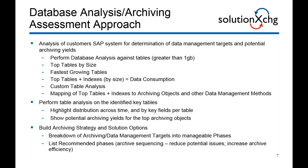We perform a table analysis on the identified key tables. Doing a table analysis highlights distribution across time — for example, for an FI document, we would look at the BKPF table and look at the distribution of data across time by company code, fiscal year, period, etc. Then we can show potential archiving yields for the top archiving objects. Finally, we build an archiving strategy and solution option, breaking down the archiving and data management targets into manageable phases. You don't want to do a big bang type implementation and try to implement 20 archive objects at once — you don't have enough background processes in the system to do that. The final step is to list recommended phases and set up a specific archiving sequence, which reduces potential issues and increases archive efficiency.